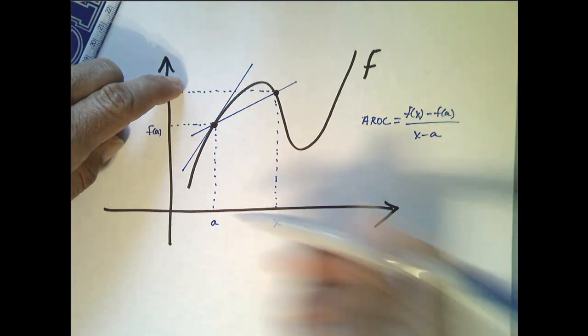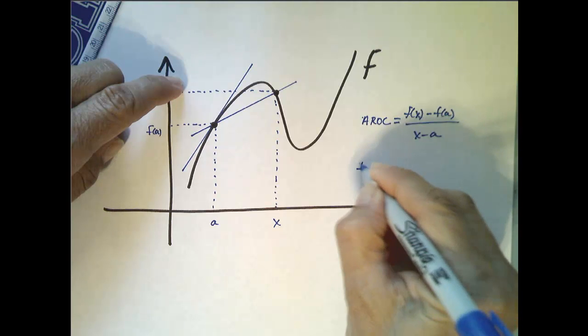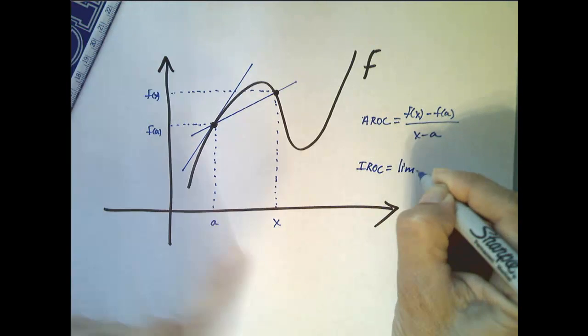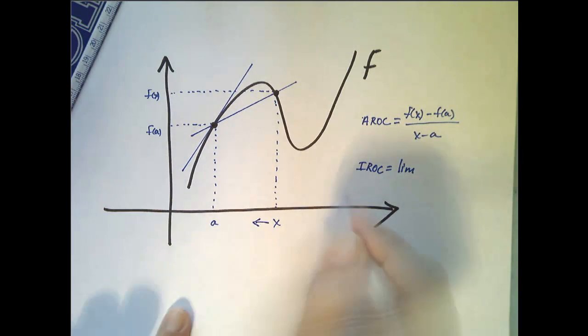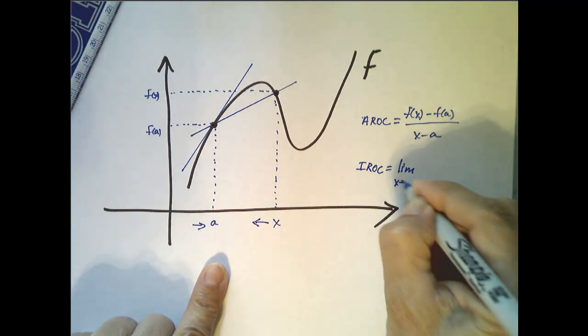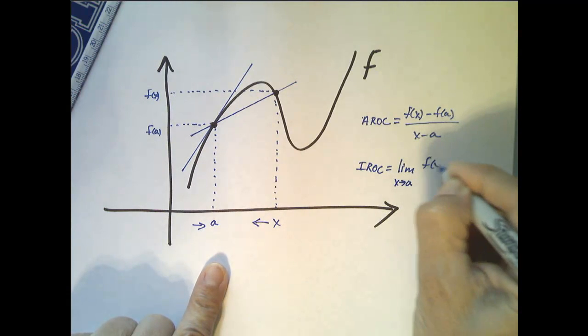just like with the velocity function. So we can define the instantaneous rate of change as the limit as x approaches a, and mind you this is from either side, of the average rates of change.